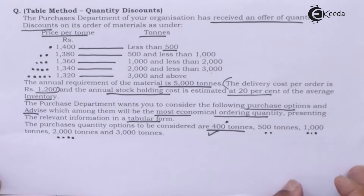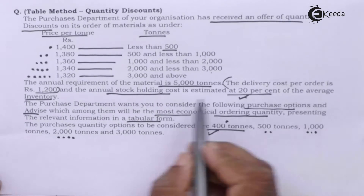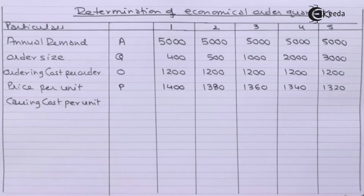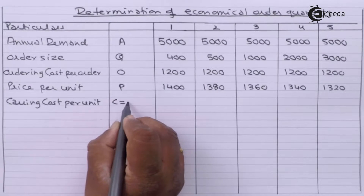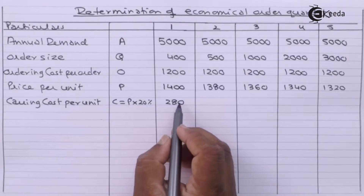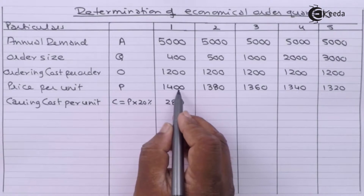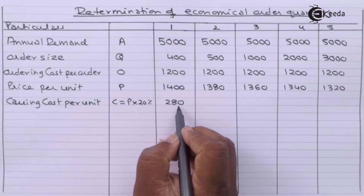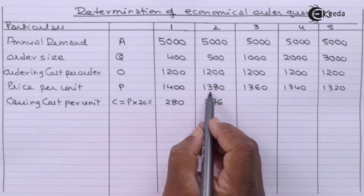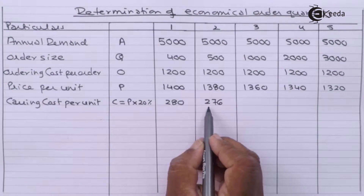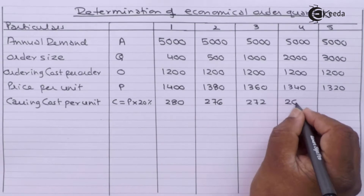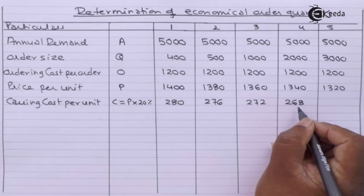Carrying cost per unit is given as 20% of average inventory. It will be 20% of 1400 = 280; 20% of 1380 = 276; and for 1000 tons order size, 20% of 1360 = 272. For 2000 tons, 20% of 1340 = 268; and for 3000 tons, 20% of 1320 = 264.